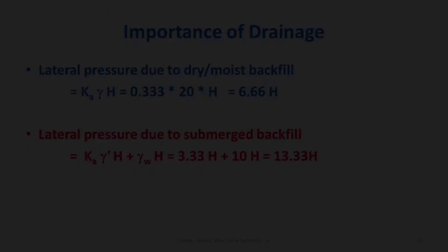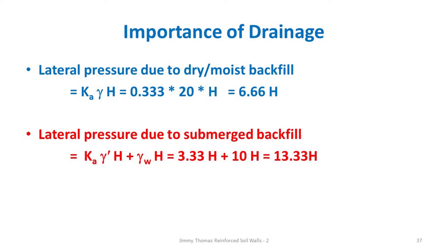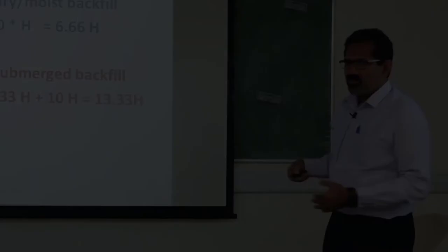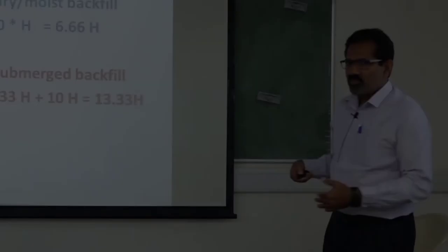Drainage is a very important aspect of any geotechnical structure. For example, if the backfill is dry or moist with phi = 30 degrees, the earth pressure coefficient gives about 6.66 times height. If that same soil is submerged, the pressure due to the submerged unit weight plus water pressure almost doubles. This is why failures in retaining walls and slopes frequently occur immediately after rains.